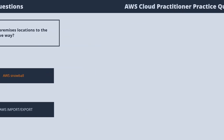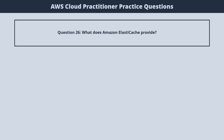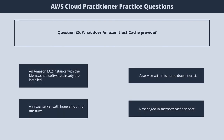Question 26. What does Amazon ElastiCache provide? 1. An Amazon EC2 instance with Memcached software already pre-installed. 2. A service with this name doesn't exist. 3. A virtual server with a huge amount of memory. 4. A managed in-memory cache service. The correct answer is 4. A managed in-memory cache service.